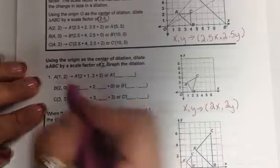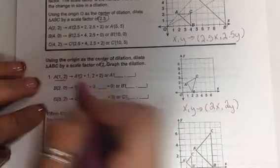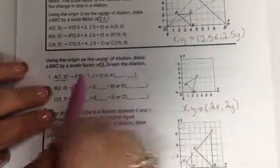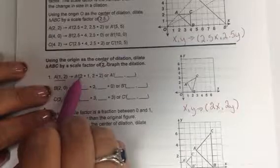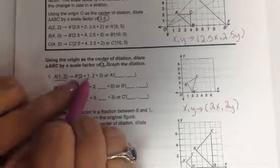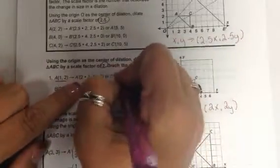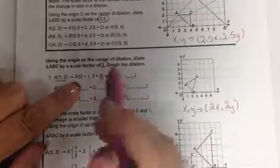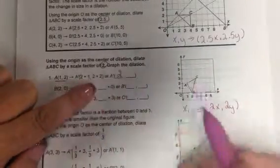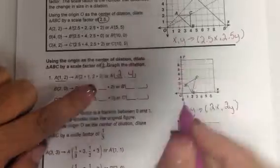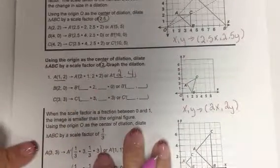They've already drawn the old figure for you, and they gave you some points. A is (1, 2). So here for A prime, they did 2 times 1. And if we go over here, 2 times 1 is 2. And then they said 2 times 2. And 2 times 2 is 4. And that gives us A prime.